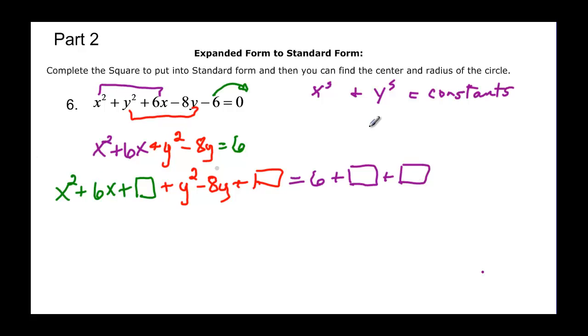So how do I know what goes in the box? Well inside the box is really going to be equal to half of the middle term squared, or b over 2 squared. We have 6 divided by 2 equals 3, and 3 squared is equal to 9.